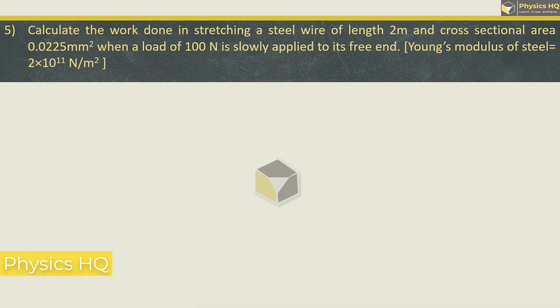Calculate the work done in stretching a steel wire of length 2 meter and cross sectional area of 0.0225 mm square. When a load of 100 newton is slowly applied to its free end. Young's modulus is given as 2 into 10 raised to 11 newton per meter square. Now work done formula is half into the force applied or the load applied into the extension. Young's modulus formula we have seen, Y equal to fL upon a into small l. Rearranging we get small l as fL upon Y into a.